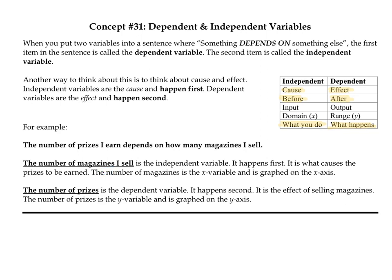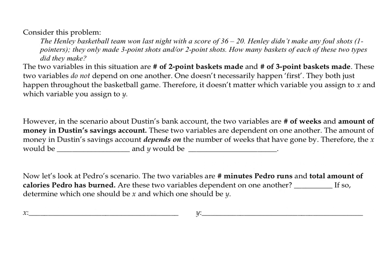Sometimes you have two variables that don't depend on each other at all. For example, the Henley basketball team won last night with a score of 36 to 20. They didn't make any foul shots — only three-point shots and two-point shots. The question is how many baskets of each type did they make? So if I've got this many two-pointers, how many three-pointers would they need to reach 36?